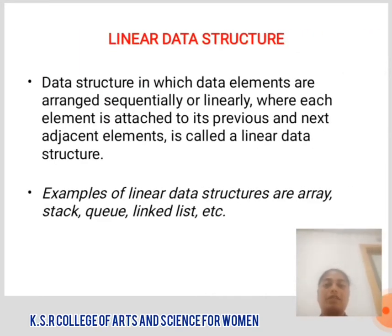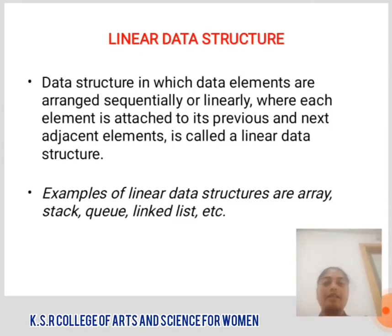Linear Data Structure: A data structure in which the data elements are arranged sequentially or linearly, where each element is attached to its previous and the next adjacent elements, is called a Linear Data Structure. Examples of Linear Data Structures are Array, Stack, Queue, Linked List, etc.